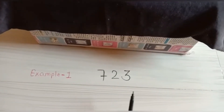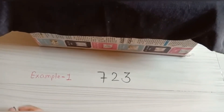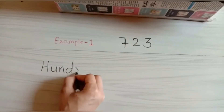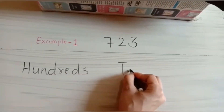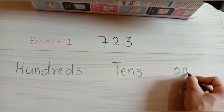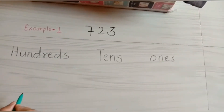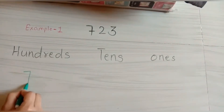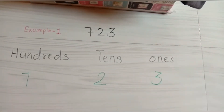First let us place the number in the place value chart which has hundreds, tens and ones. Let's place this number in the chart: seven hundred here, two here and three here.